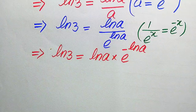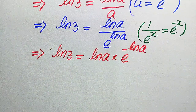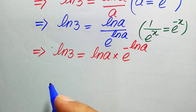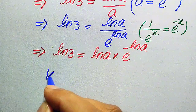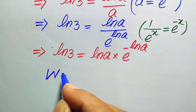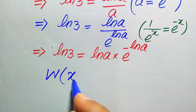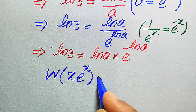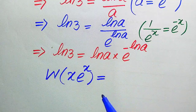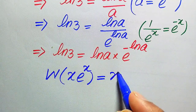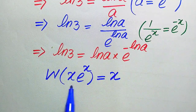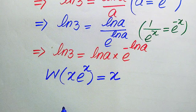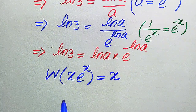In the next step, we apply the Lambert W function. The Lambert W function is defined as: W of x times e to the power of x equals x. This statement is the definition of the Lambert W function.